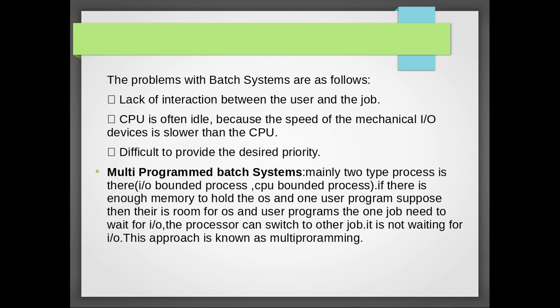This brings us to multi-programmed batch systems. There are mainly two types of processes in such a system: IO-bounded processes and CPU-bounded processes.